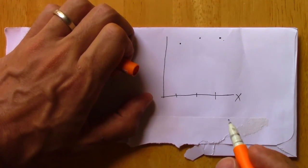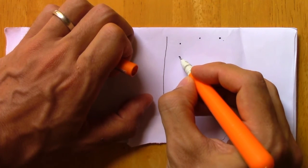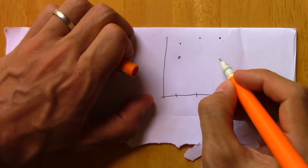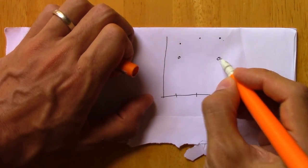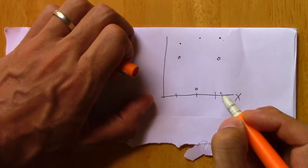We could also imagine, though, a case with let's say a point up here and a point up here, but also a point down here.